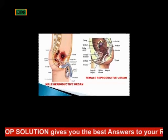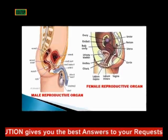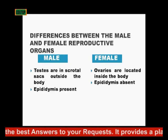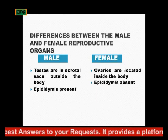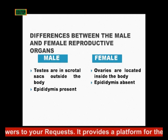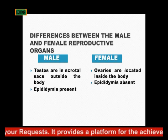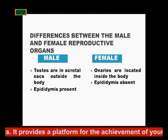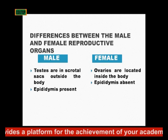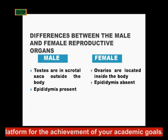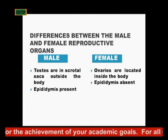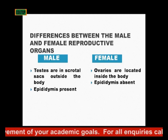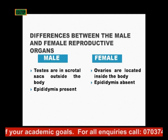Now for the differences between male and female reproductive organs. In the male, testes are in the scrotal sac and are outside the body, but in the female, ovaries are located inside the body. In the male, the epididymis is present, while in the female this is absent.